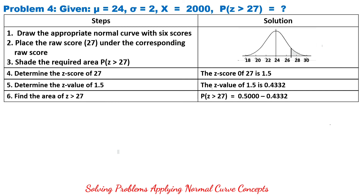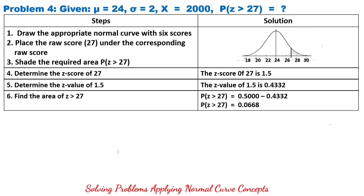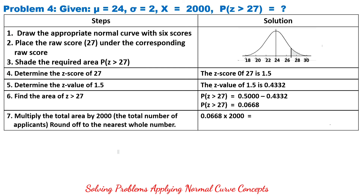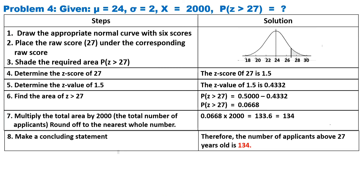Then find the area for Z greater than 27: 0.5000 minus 0.4332 equals 0.0668. To determine the number of applicants above age 27, multiply by 2,000: 0.0668 times 2,000 equals 133.6, rounded off to 134. Therefore, the number of applicants above 27 years old is 134.